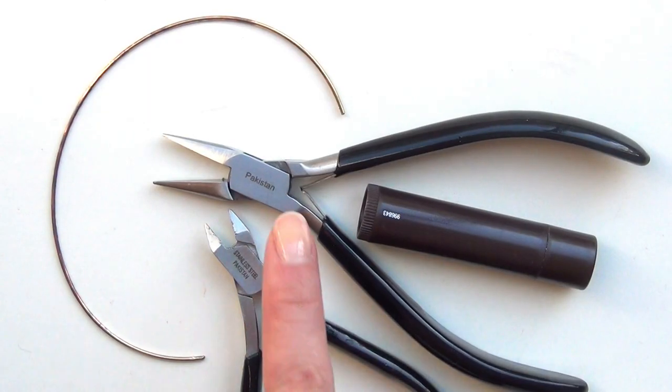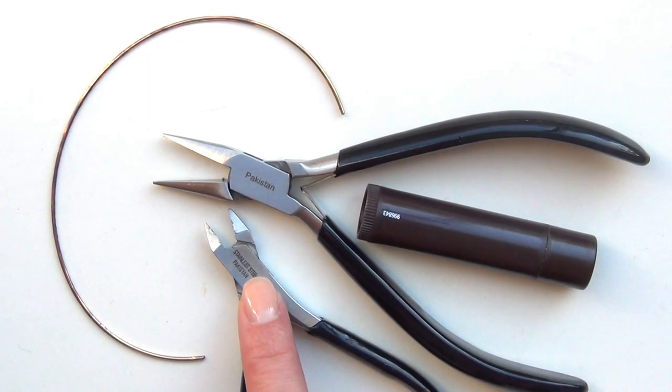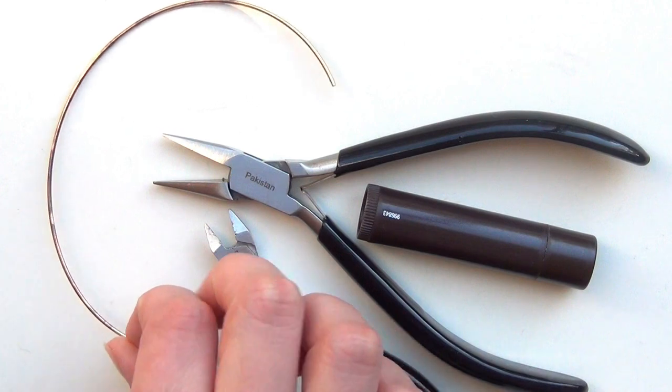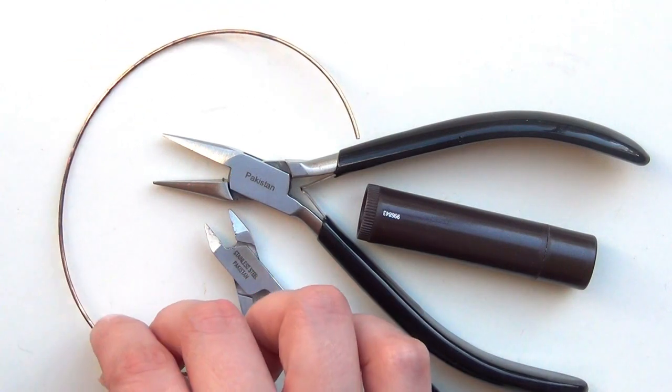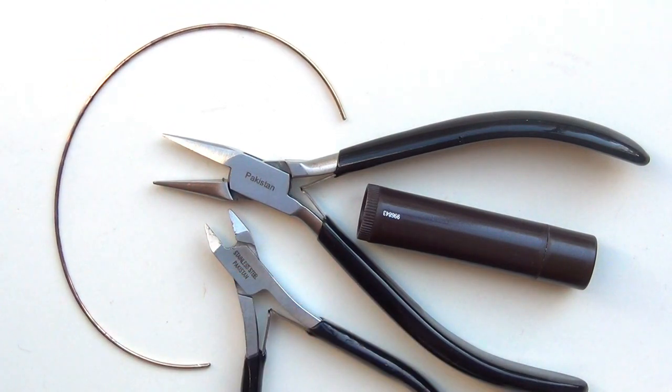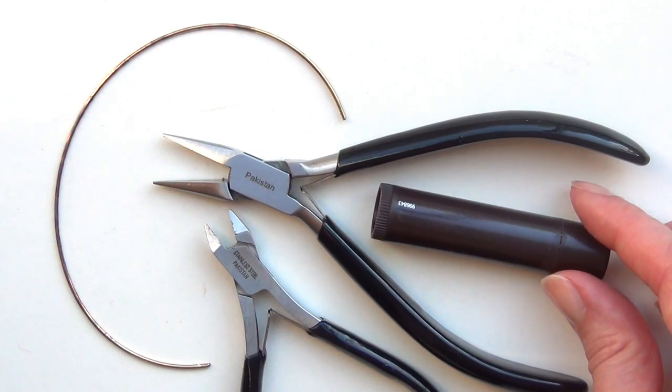For this you'll need a pair of pliers, some wire cutters, a piece of fairly heavy gauge wire—I'm just using this old piece of wire from an old piece of jewelry—and something that is the size that you want your ring to be.